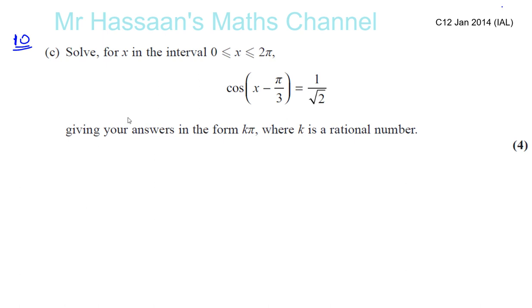Okay, now to solve question number 10, part c, this trig equation. We are told to solve cosine of x minus pi over 3 equals 1 over root 2. In solving such equations, we must make sure we do not lose out on any solutions. In order to do that, we must modify the limits that we've been given according to what is inside this bracket.